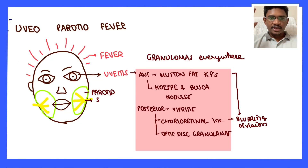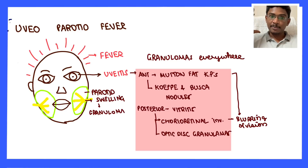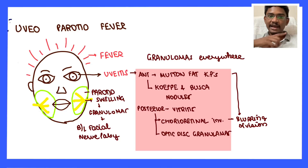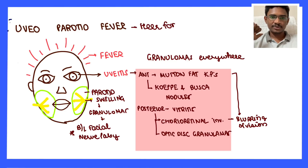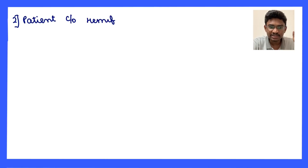Granulomas can also form in the parotids causing bilateral parotid gland enlargement. These granulomas can compress the bilateral facial nerve causing bilateral facial nerve palsy. There are very few conditions causing simultaneous bilateral facial nerve palsy, and sarcoidosis must be kept in the differentials when such a question is asked. Everything fits sarcoidosis in this scenario.